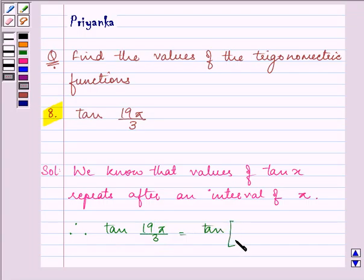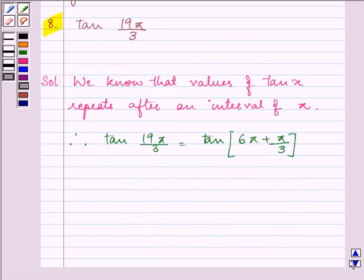So therefore, we can write tan(19π/3) as tan(6π + π/3). Isn't it?